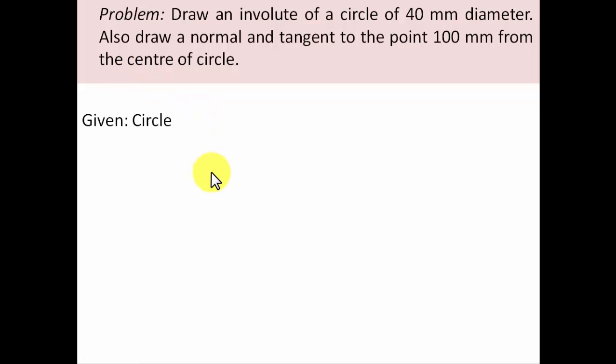We've been given a circle with diameter 40 millimeters. If you find the circumference of the circle, it works out as πD. Putting the values, you get 125.7 mm.